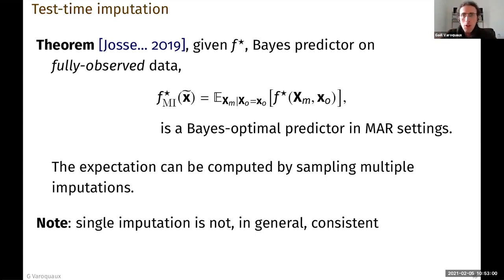Then what I'm telling you in this expression here is that I can build using expectation on the conditional distribution of the missing given the observed. I can build a Bayes optimal predictor that works on partially observed data. And for this, I need to compute the expectation on the missing given the observed.